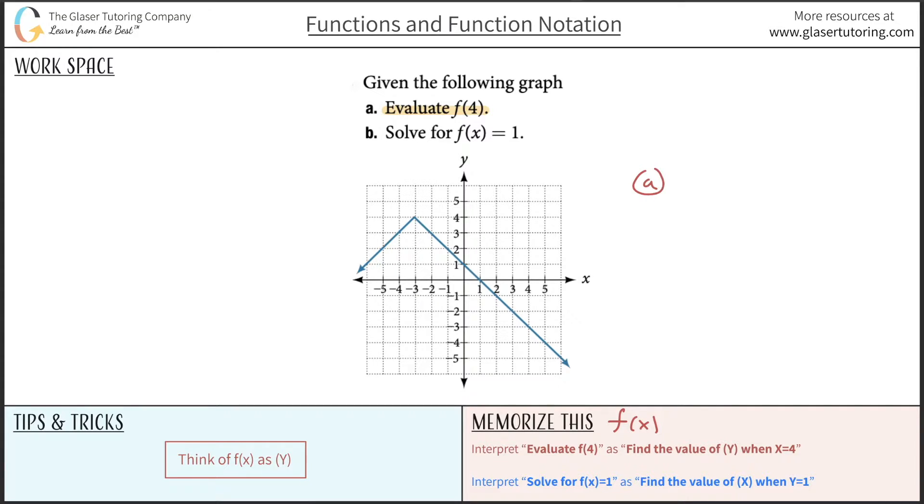Okay, so for letter A, we know that x is equal to 4. So go to your graph, find where x is 4. So it's right here. And you can draw now a vertical line because this vertical line represents all the locations in which x is equal to 4.